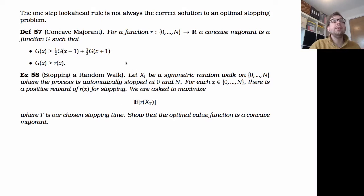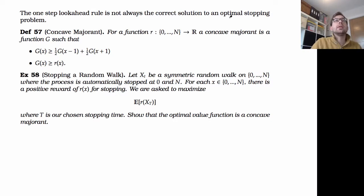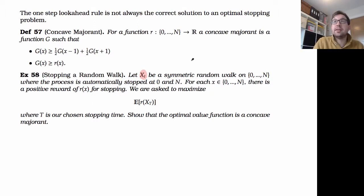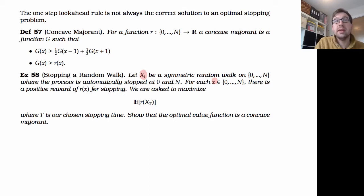Let's do the next part. We're going to consider a different type of optimal stopping, one where the one-step look-ahead rule isn't necessarily going to work. We'll look at a stopping problem where x(t) is a symmetric random walk on {0, ..., N} — think of this as some sort of random stock price. We have to decide when to stop. It goes up with probability one-half and down with probability one-half, and if it hits the endpoints zero or N the process is automatically stopped. We assume each state has a positive reward r(x) for stopping, so this is a maximization problem — maximization of rewards rather than minimization of costs.